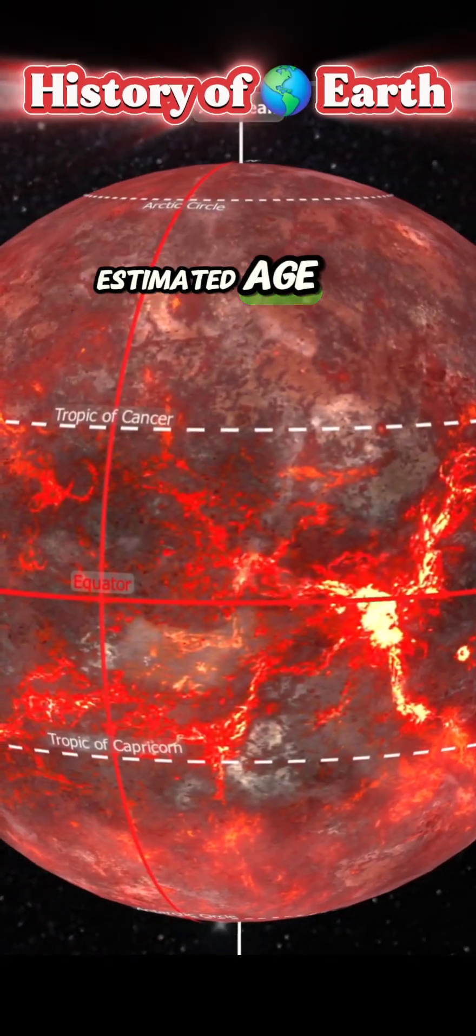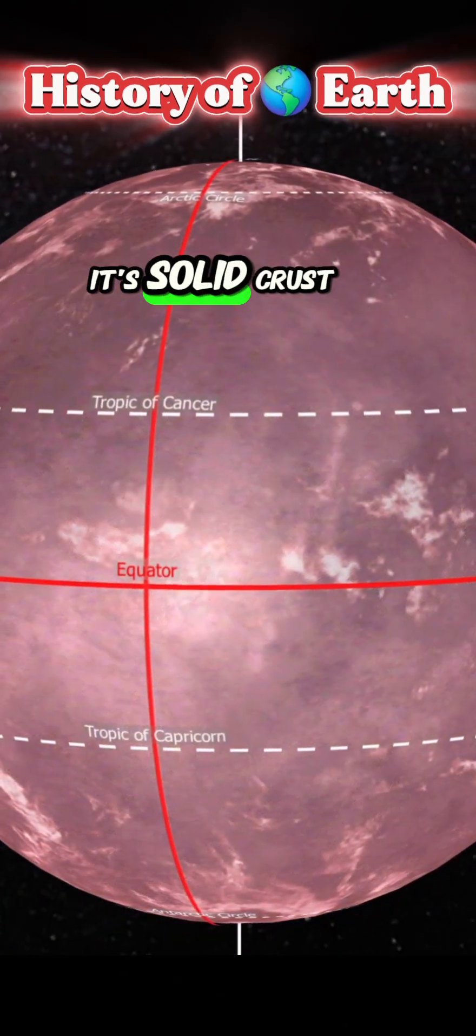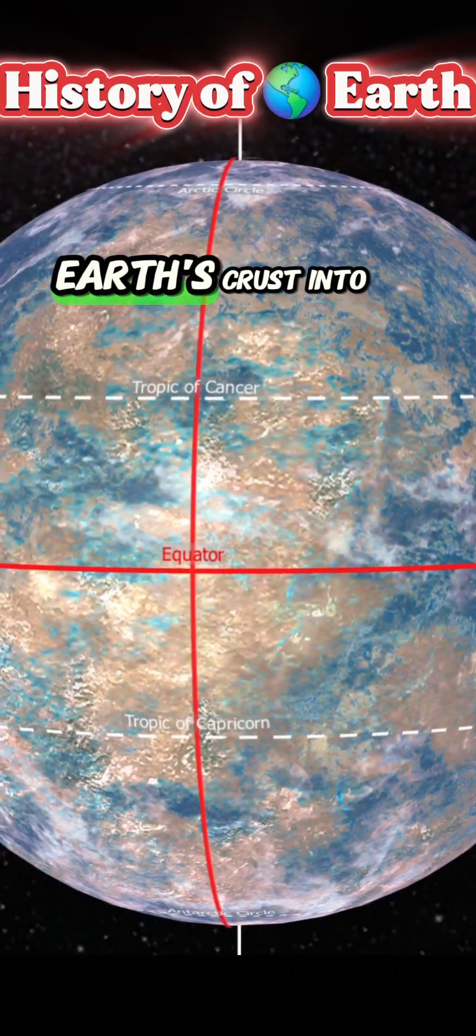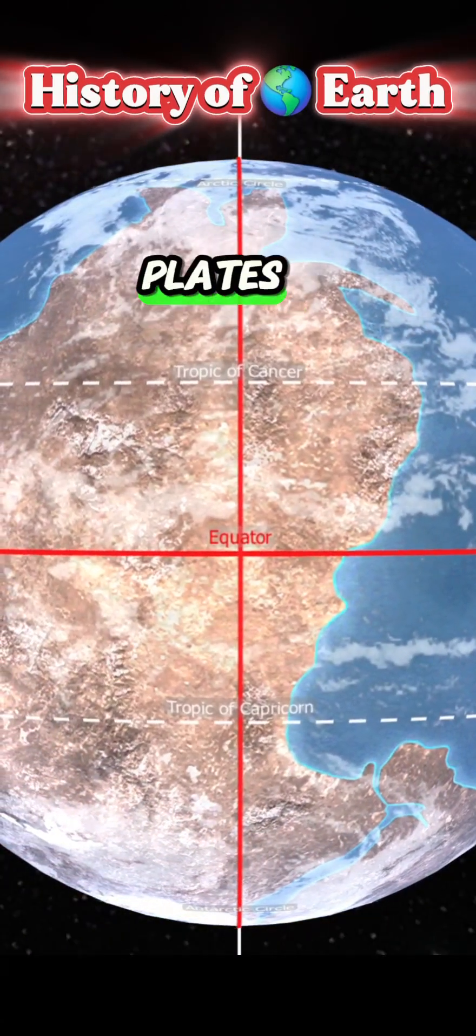The Earth's estimated age is 4.6 billion years. This is when its solid crust formed. Magma flows broke up the Earth's crust into pieces, thus forcing the migration of tectonic plates.